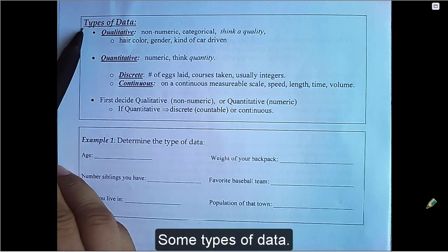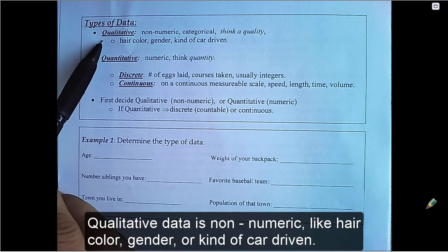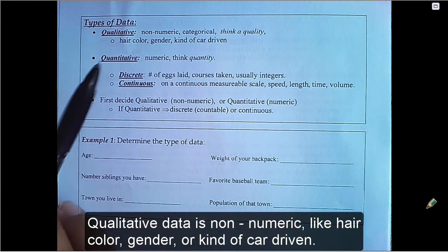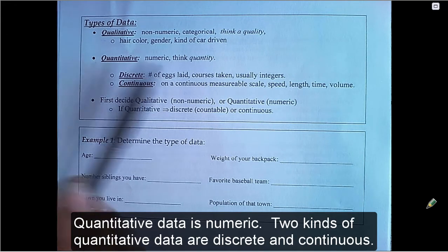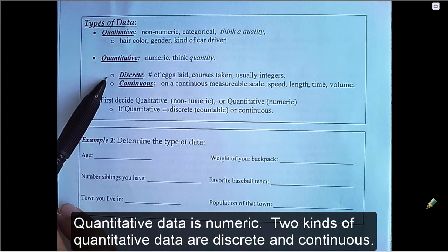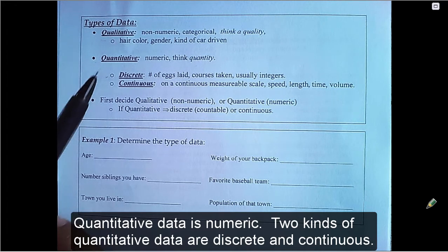Some types of data. Qualitative data is non-numeric, like hair color, gender, or kind of car driven. Quantitative data is numeric. Two kinds of quantitative data are discrete and continuous.